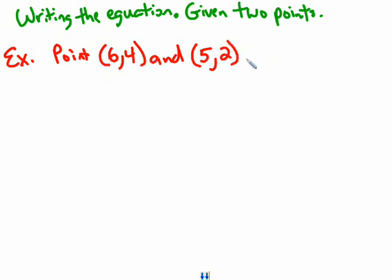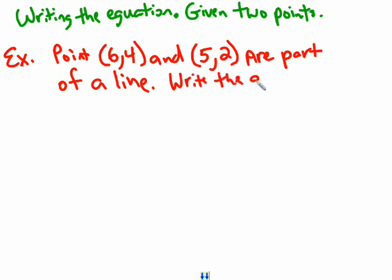Points (6,4) and (5,2) are part of a line, or I should say, are on the line. Write the equation for the line that passes through those two points.